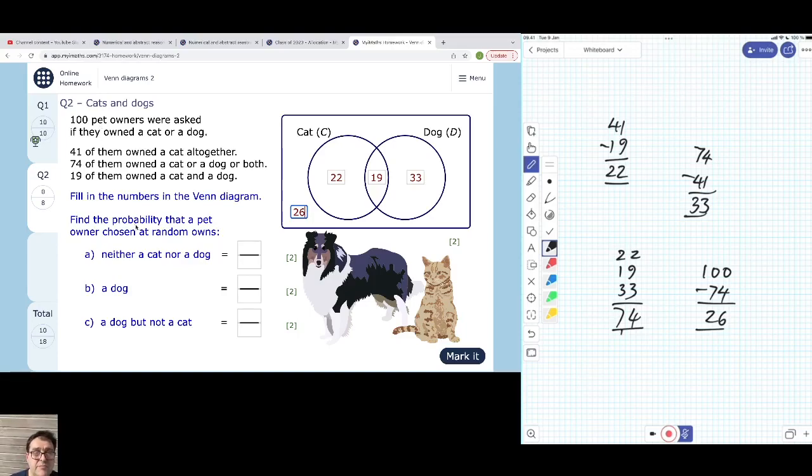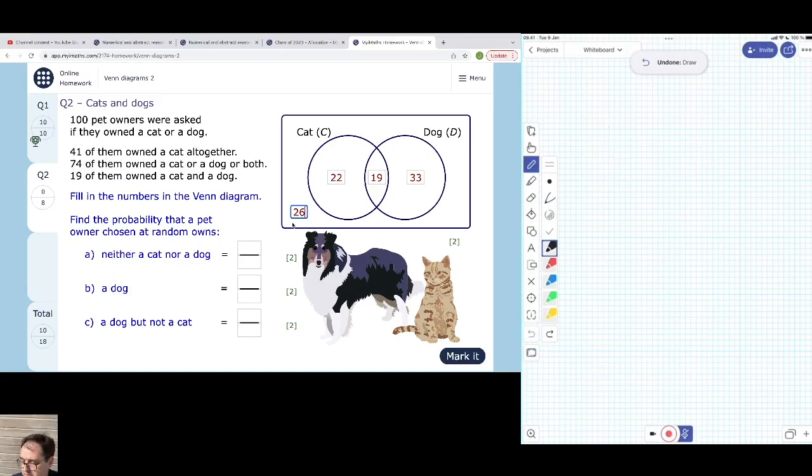So find the probability that a pet owner chosen at random owns neither a cat nor a dog. So that's 26 out of the 100. Let me just make myself a bit of space here. Get rid of all this.